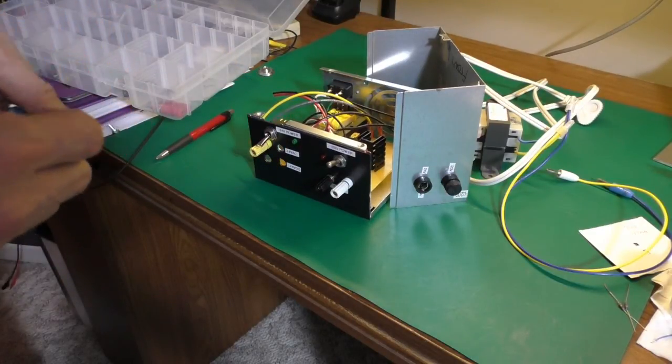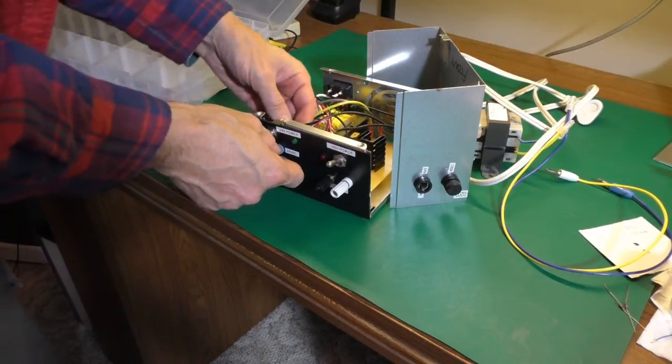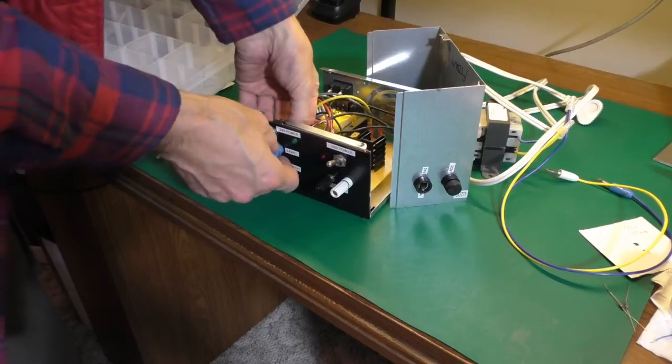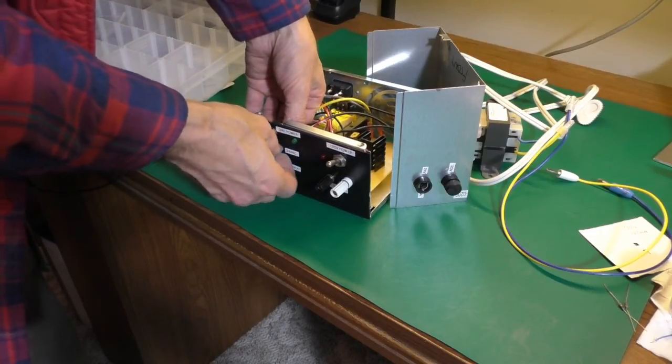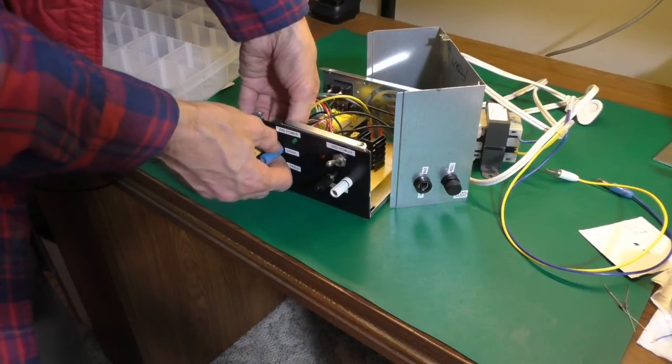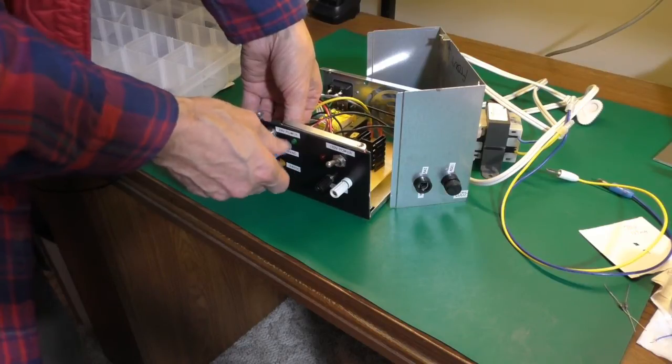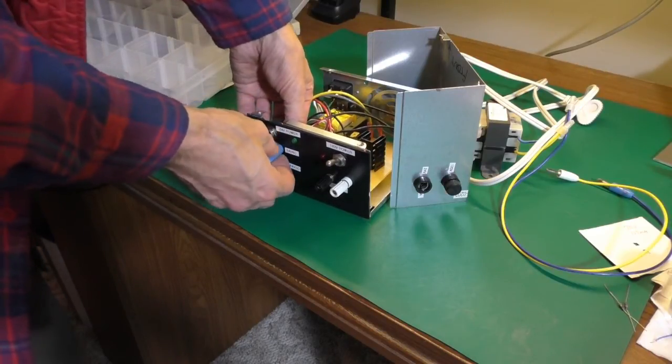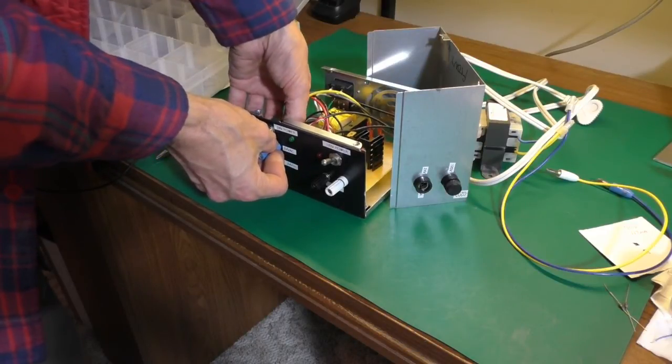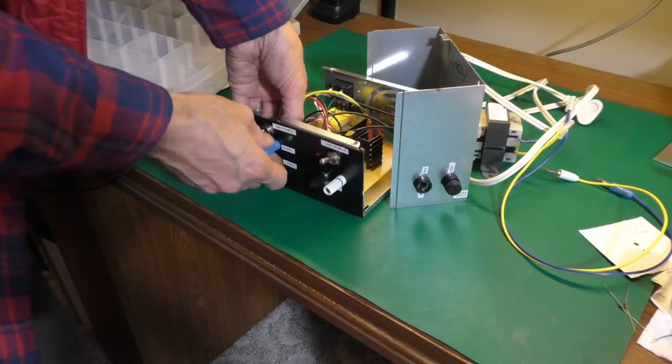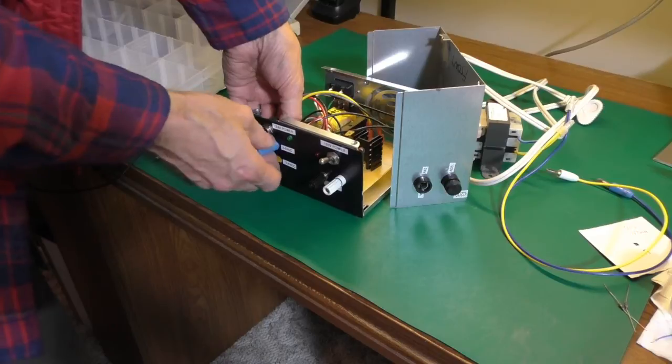On the 24 volt AC I'm using blue for the negative, well that's AC so it doesn't really have a negative, but I'm just going to use the blue for the other side and yellow for what could be considered the hot side. If I use black for this and black for the 24 volt DC then sometimes you can get screwy with it thinking it's the same ground and it's not going to be, so I like to separate the colors as much as possible.